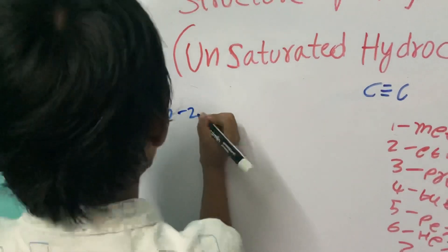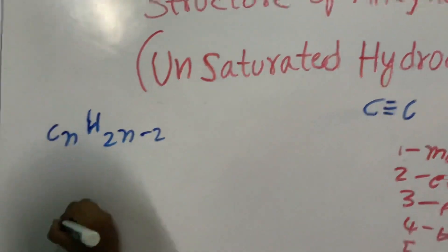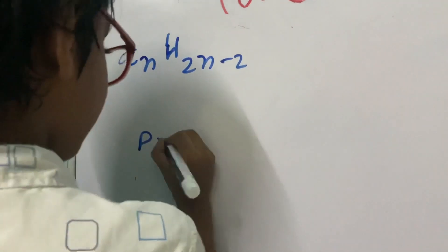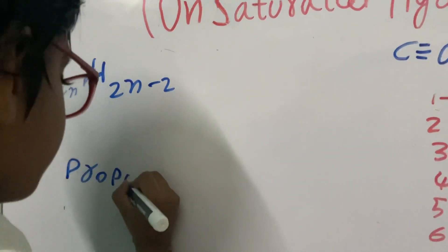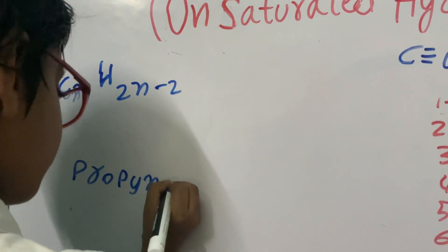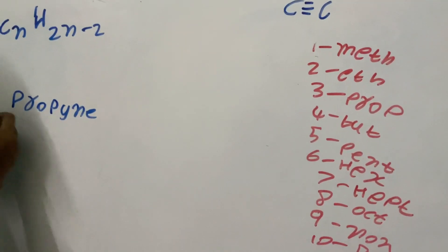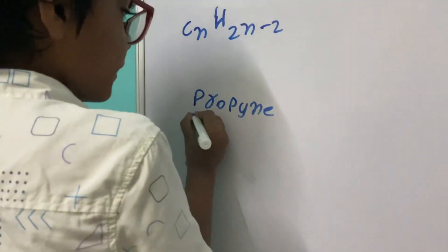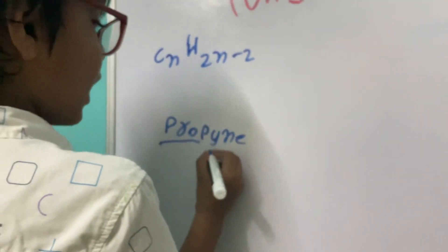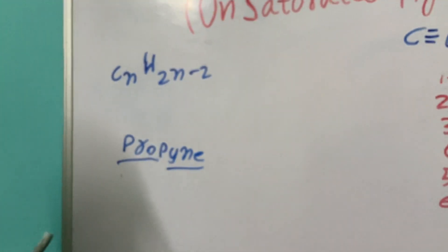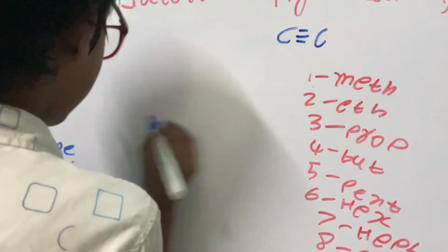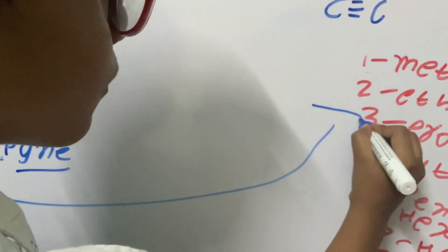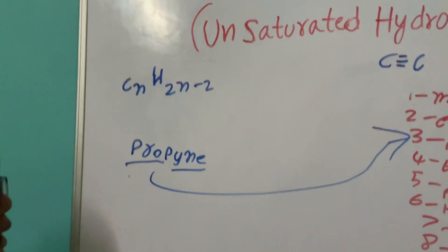N is 2. For example, we will take propine. The name consists of two parts: the number of carbons and the name of the family. 'Prop' means 3, so there are 3 carbon atoms.